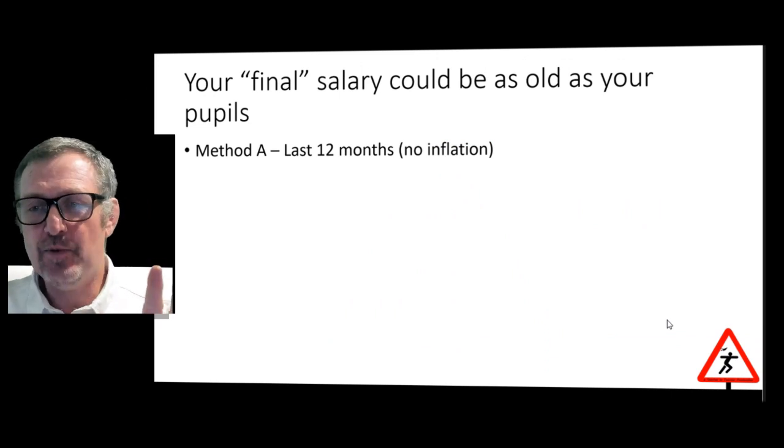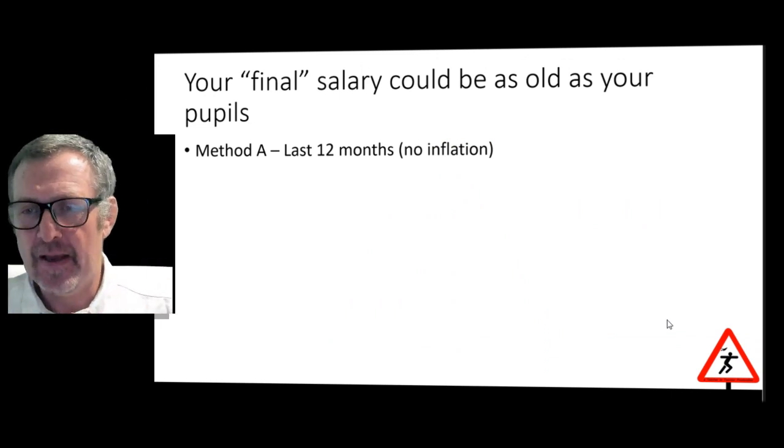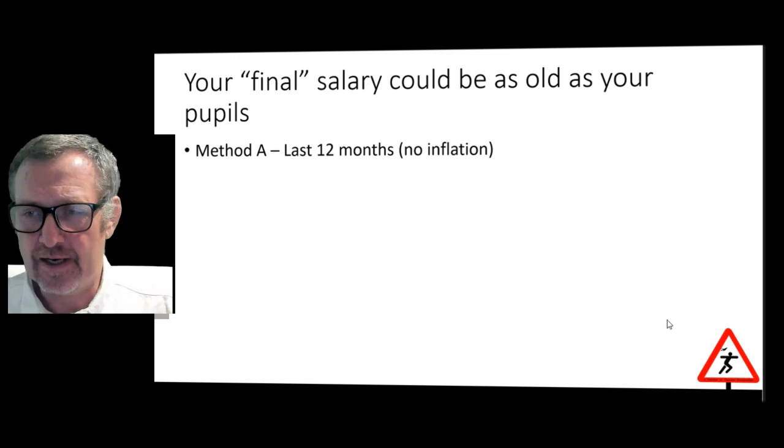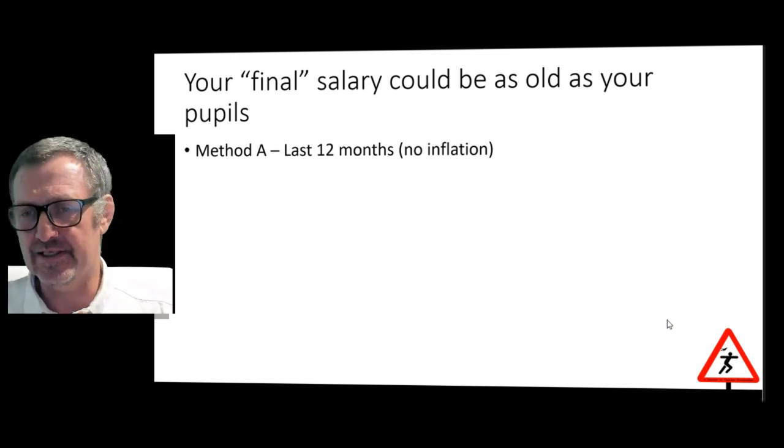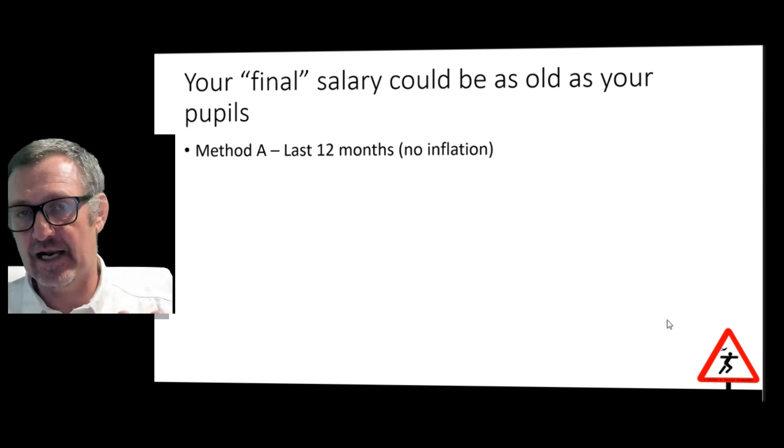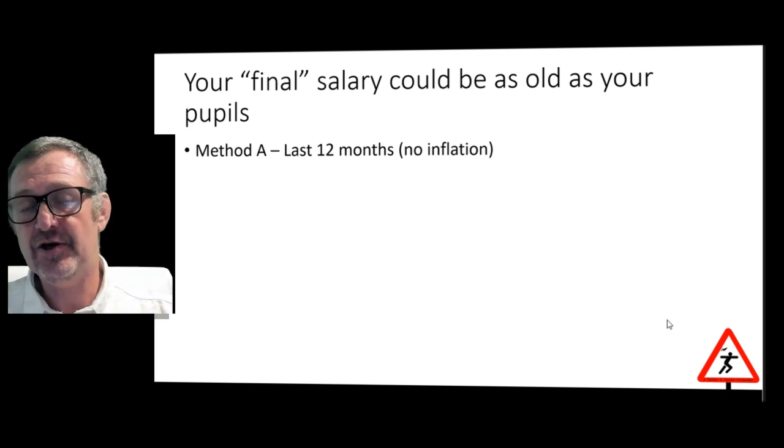Firstly, I need to explain what is meant by your final salary, because I know that some teachers still believe it is just that, just your salary from the last year. And whilst they are partly correct, that is just one of the two ways in which your final salary can be worked out. Method A is your last 12 months salary, that is your full-time equivalent salary if you are part-time. No inflation is added to it, it is just the total you get paid over those 12 months.